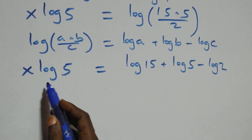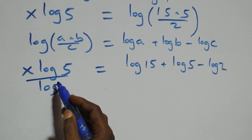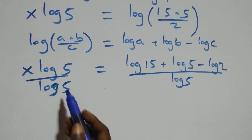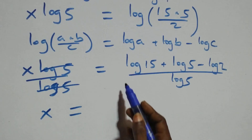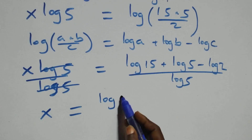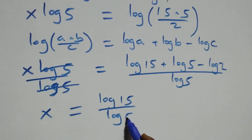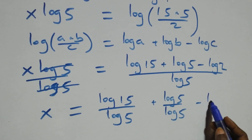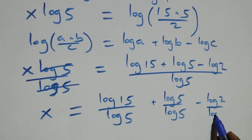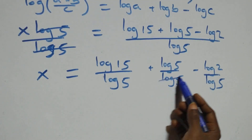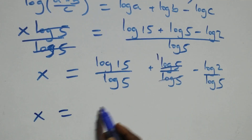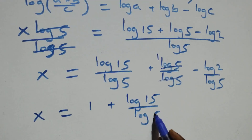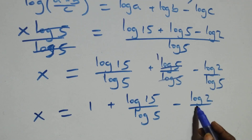At this, we divide both sides by log 5. Log 5 cancels on the left, giving us x equals log 15 over log 5 plus log 5 over log 5 minus log 2 over log 5. Here, log 5 over log 5 cancels to give 1. So x equals 1 plus log 15 over log 5 minus log 2 over log 5.